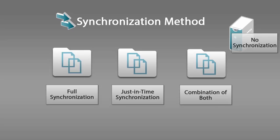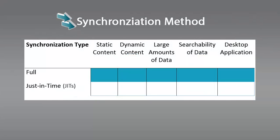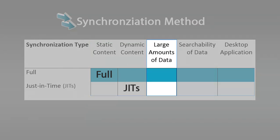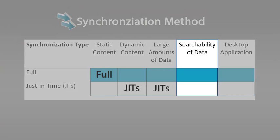There is no perfect implementation that applies to all Netfolders. Instead, review the data that the Netfolder is accessing and consider the following. Is the data static or dynamic? Full synchronization is more appropriate for static data, and just-in-time synchronization is more appropriate for dynamic data. Is there a large amount of data? If so, consider using only just-in-time synchronization, because performing a full synchronization on a large amount of data can consume many resources.